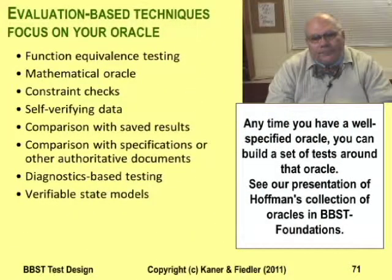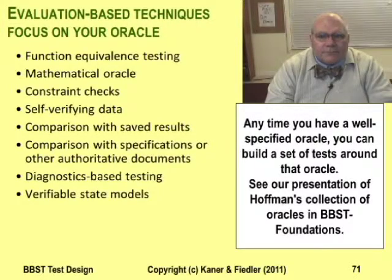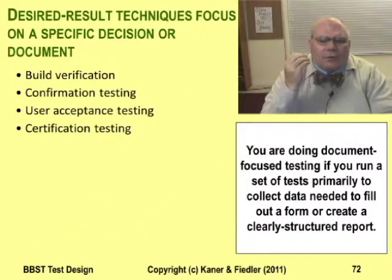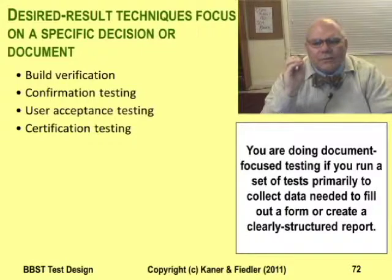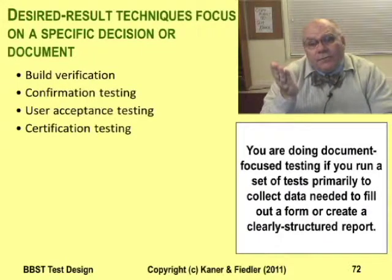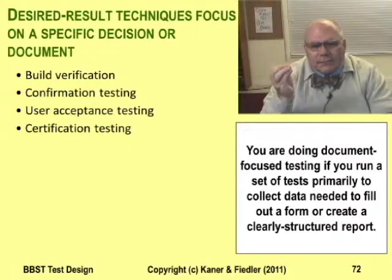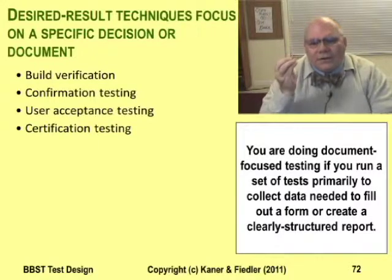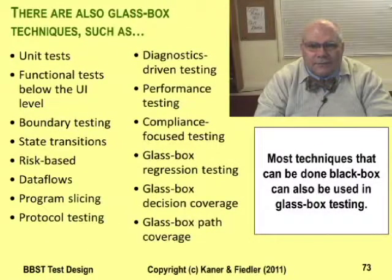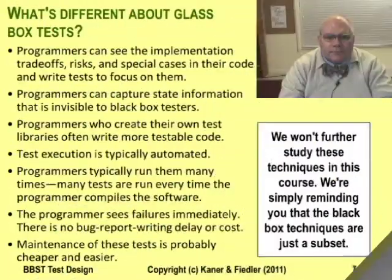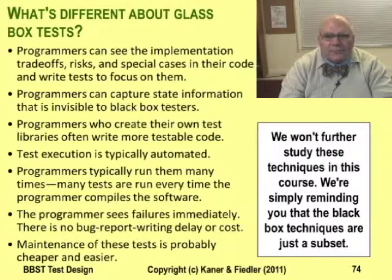If you have a good oracle — especially one you can use easily in automated tests — then you have a basis for an evaluation-based technique. The difference between the techniques here lies in the differences between the oracles. Imagine having a customer, auditor, or regulator who requires your company to certify that your product has certain characteristics. To prove those characteristics you'll have to do some tests — that's what I mean by desired result testing. These are the tests you do to honestly fill out some form or sign your name to a statement of facts about the program. Finally, there are lots of glass box techniques, but we aren't studying them in this course. I'm just mentioning them here to put that long list of black box techniques in perspective — it is a long list, but it is only part of the story.